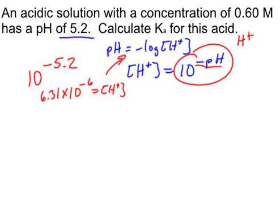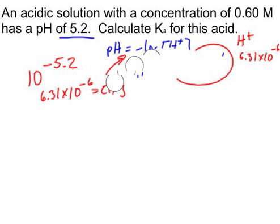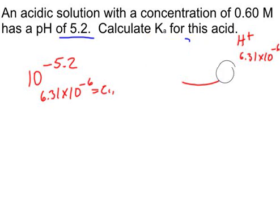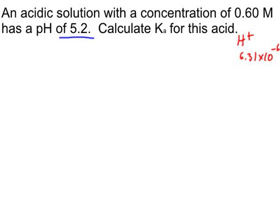So I'm just going to write this over on the side. H+ is 6.31 times 10 to the negative 6. And it's going to start over because I need room for my ice chart. All these problems with Ka and Kb require an ice chart, or you're going to have a lot of trouble doing that. So I, C, E.